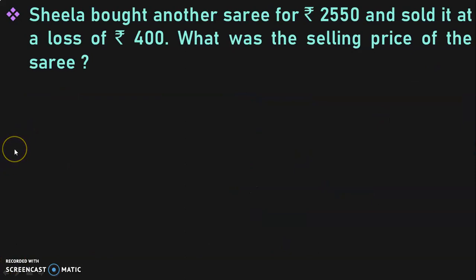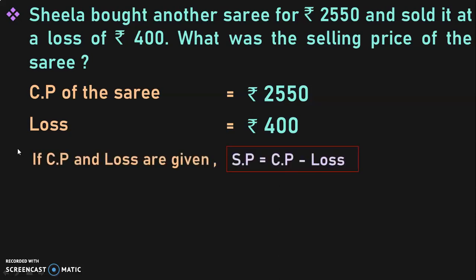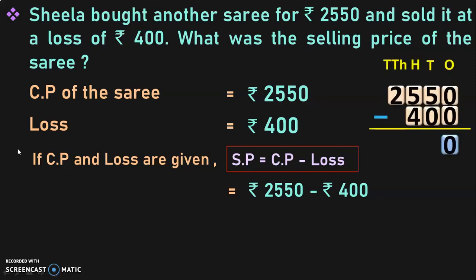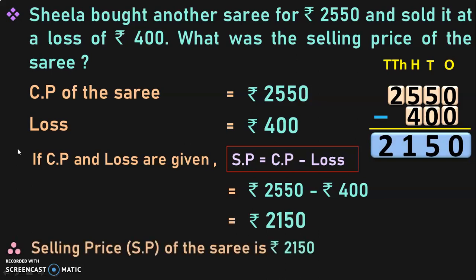Sheila bought another saree for rupees 2550 and sold it at a loss of rupees 400. What was the selling price of the saree? Cost price is rupees 2550. Loss is rupees 400. Since cost price and loss are given, selling price equals cost price minus loss: 2550 minus 400. In the 1's place: 0; 10's place: 5; 100's place: 1; 1000's place: 2. The difference is 2150. The selling price of the saree is rupees 2150.